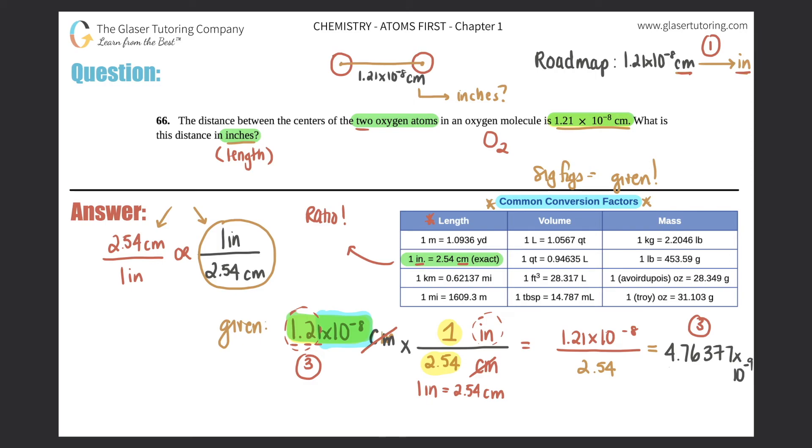So it would be 4.76 times 10 to the negative ninth. And now you just include your unit. The unit that was last standing was inches. So this is inches. So that's what equates to 1.21 times 10 to the negative eight centimeters. 4.76 times 10 to the negative ninth inches. And that's your answer.